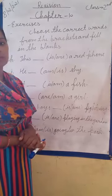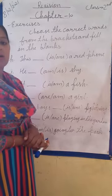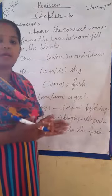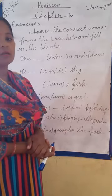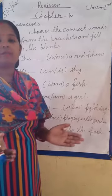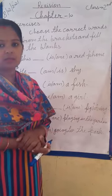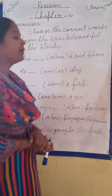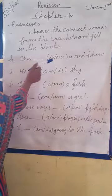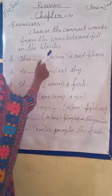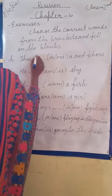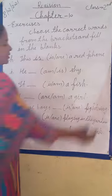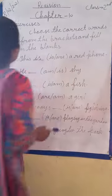Plural noun ya pronoun ke saath 'are' aata hai. Aur jo 'I' hai uske saath always 'am' ka use hota hai. Is, are, am — these are all helping words. Sentence mein in ka use hota hai kyunki yeh helping words hain. 'This' ke saath 'is' use hoga. Our sentence is: this is a red phone.